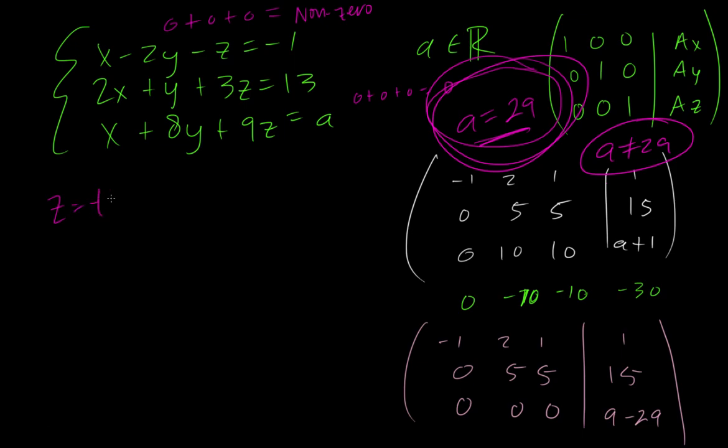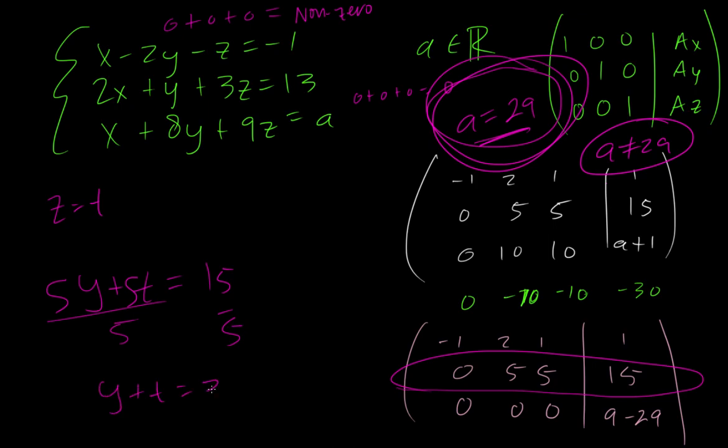We're going to let Z be equal to T, and then when we do that, if we're looking at row 2 right here, we're going to get 5Y plus 5T is equal to 15, and we can divide everything by 5. And so, that means Y plus T is equal to 3. So, we have these two things. Whoops, I shouldn't have circled that yet. We want to solve it for Y. And so, Y is equal to 3 minus T.